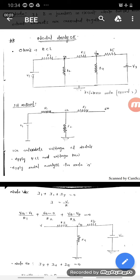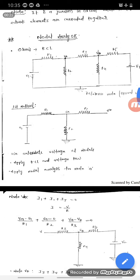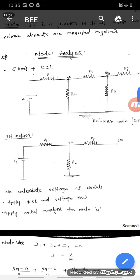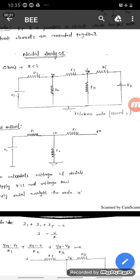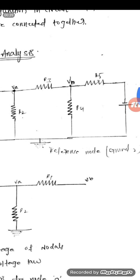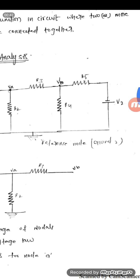Hello students. In the previous class I discussed KCL and KVL. In this class we will discuss what is meant by nodal analysis. Nodal analysis is the combination of Ohm's Law and KCL. In nodal analysis we have 3 or 4 methods. First we will consider the simple method, where the circuit consists of V1 and V2 — only voltage sources and only 2 sources.